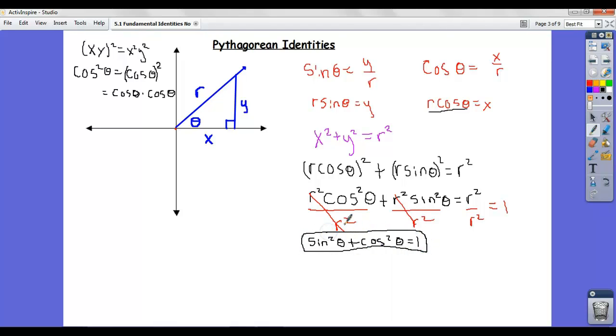So there's one key trig identity. Notice that means also, you could rearrange that. That's one identity, but also, if you subtract cosine from both sides, you get this one. And if you subtract sine from both sides, you get this one. So once you get one down, you can kind of rearrange things. So that's one trig identity.